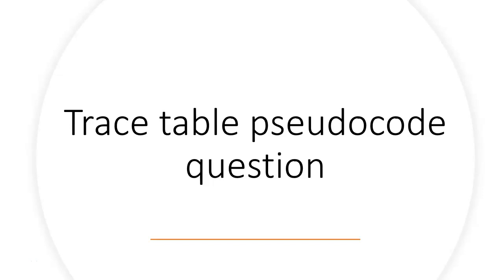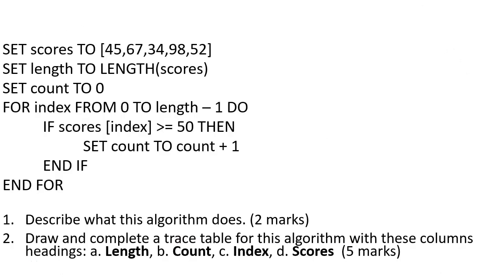Hello and welcome to a computer science question. This time we're going to be looking at trace tables and pseudocode. I've got this question here with an algorithm which is eight lines long, and I've got a couple of questions underneath that I need to answer. Question one is to describe what this algorithm does for two marks.